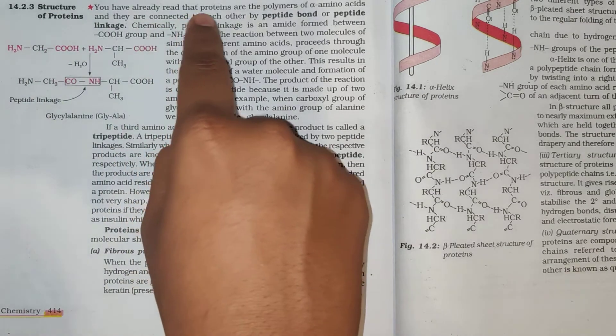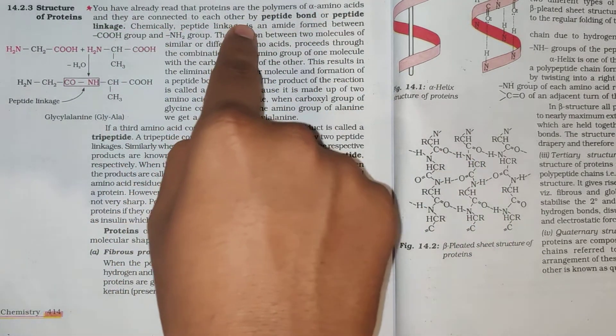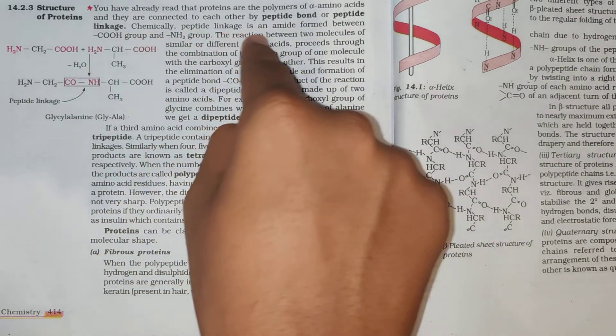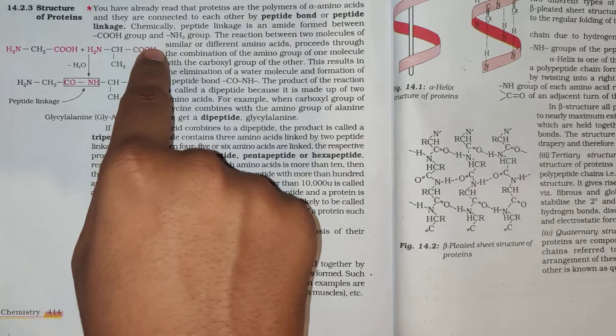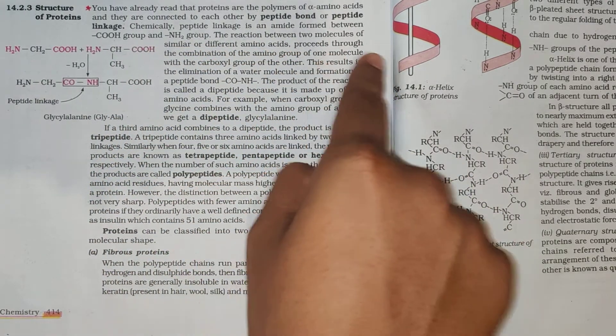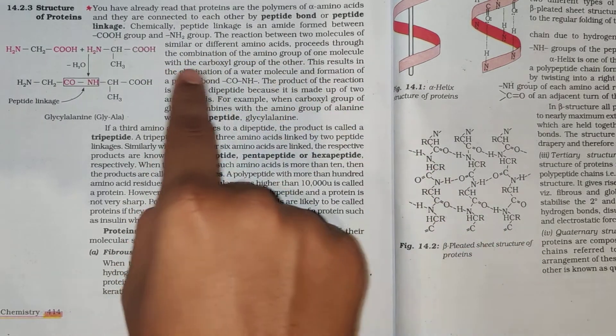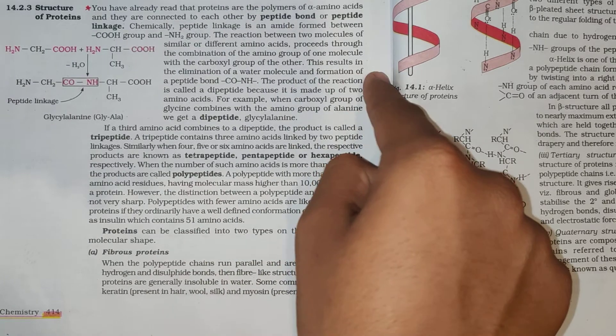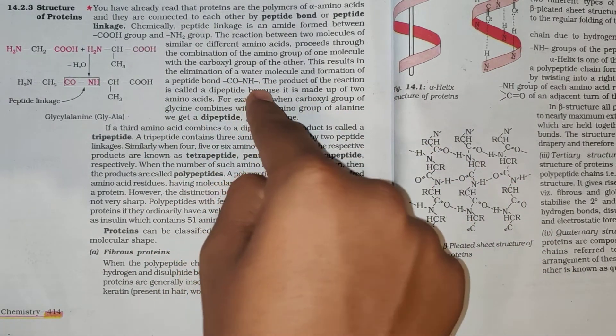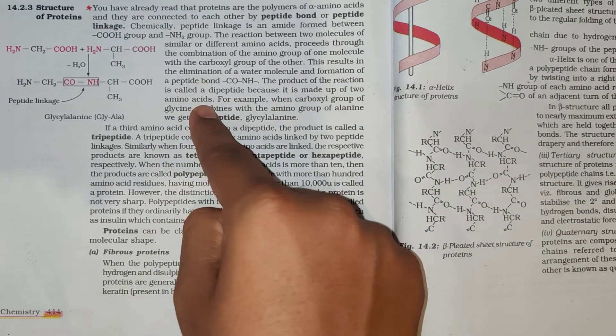Structure of Proteins. You have already read that proteins are the polymers of alpha amino acids and they are connected to each other by peptide bond or peptide linkage. Chemically, peptide linkage is an amide formed between COOH group and NH2 group. The reaction between two molecules of similar or different amino acids proceeds through the combination of the amino group of one molecule with the carboxyl group of the other. This results in the elimination of a water molecule and the formation of a peptide bond CONH.